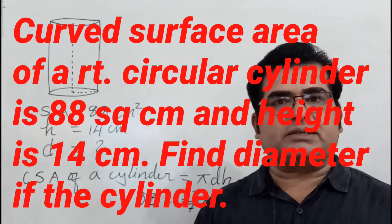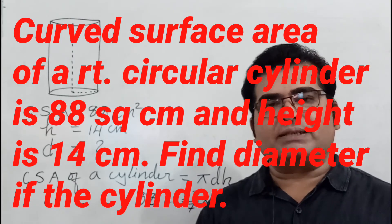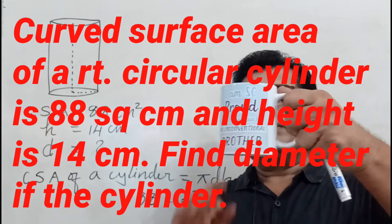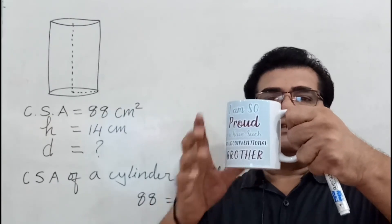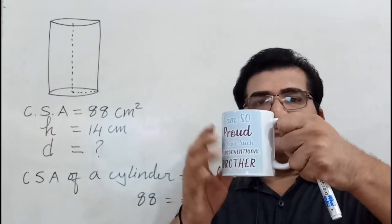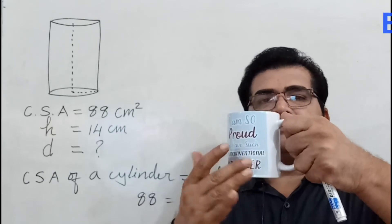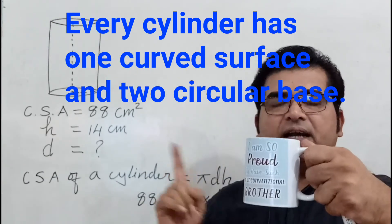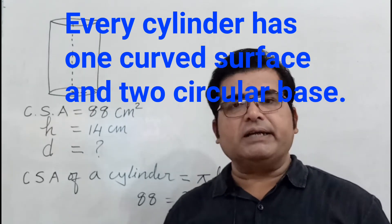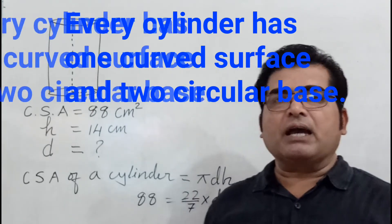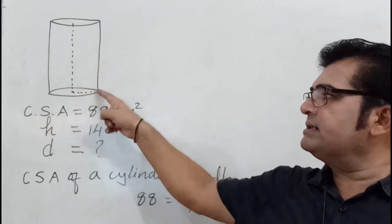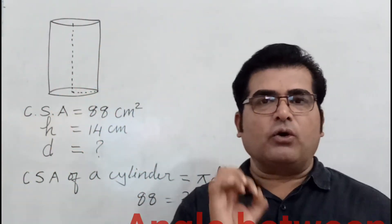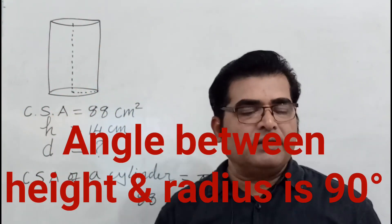What is a right circular cylinder? Look at this 3D object - every cylinder has one curved surface area and two circular bases. Why is it called a right circular cylinder? Because the angle between height and radius is always 90 degrees, always a right angle.